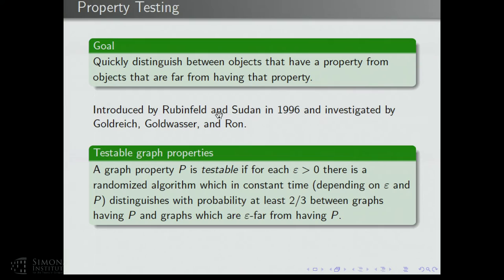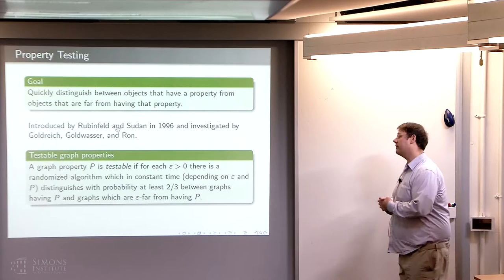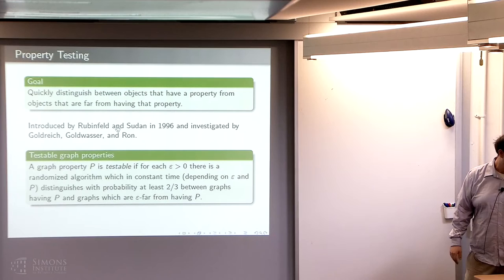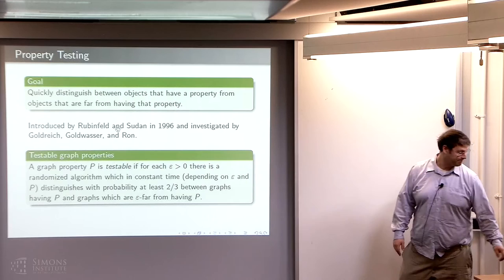Graph property testing has received a lot of attention. A graph property P is testable if for each epsilon greater than 0, there's a randomized algorithm which in constant time — allowed to depend on epsilon and the property P but not on the input size — distinguishes with probability at least two-thirds between graphs having property P and graphs which are epsilon far from having P. The question is which graph properties are testable and can the dependence on epsilon and P be rather small.